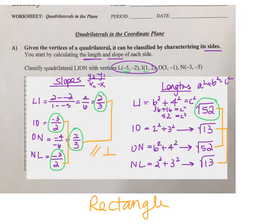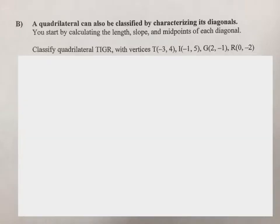All right, so let's look at example B. This time they're wanting me to classify using the diagonals. They tell me to calculate the length, slope, and midpoint of each diagonal. Now remember, a quadrilateral has four sides but it only has two diagonals. So the diagonal would be like T and G or I and R. I'm just going to go in the order that they tell me. If we do length first, we're going to do TG and we need to do IR.